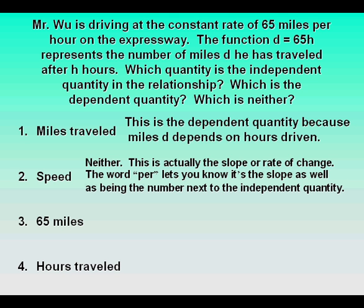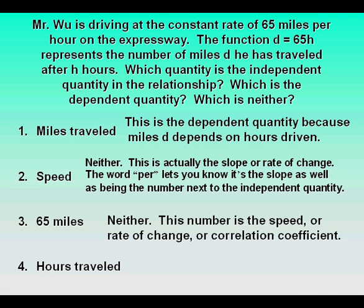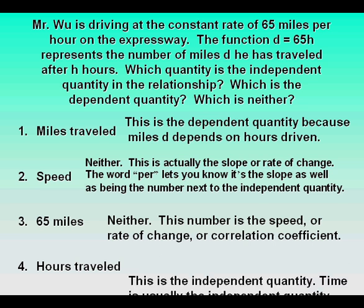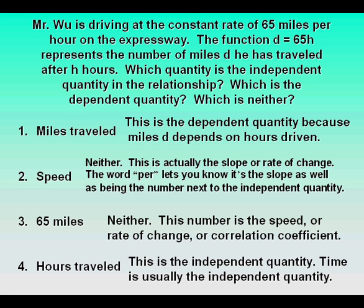The word 'per' lets you know it's the slope, as well as being the number next to the independent quantity. 65 miles per hour is neither — it is the speed or rate of change. Hours traveled is the independent quantity. Time is usually the independent quantity.